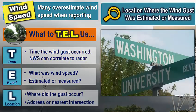And finally, the location where you observed the wind speed. An intersection or the address is fine, because you are usually going to be underneath or near the strong wind when it hits.